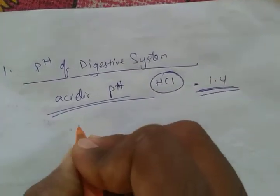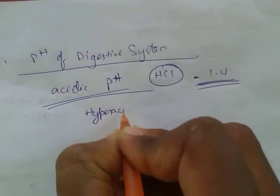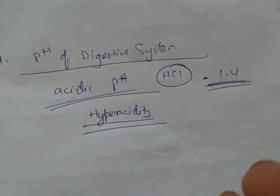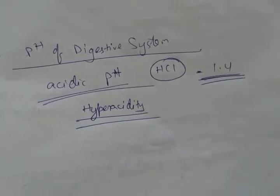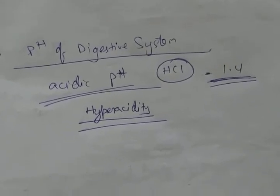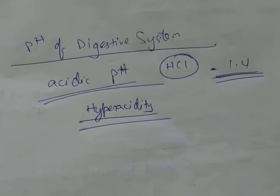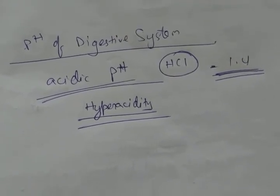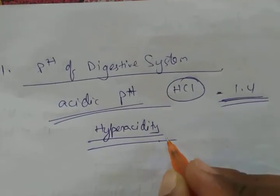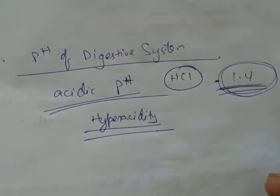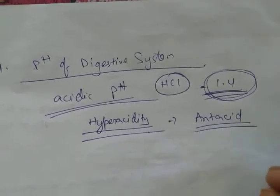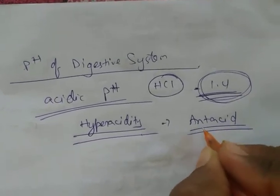Sometimes we suffer from a condition called hyperacidity, which means a large amount of hydrochloric acid is produced that is not being used. It causes irritation in our stomach's inner lining and we suffer pain and burning sensation. Here the pH drops below this limit.